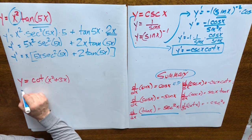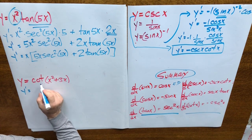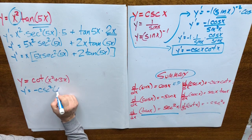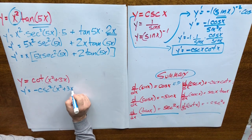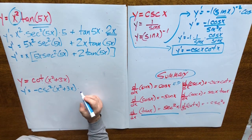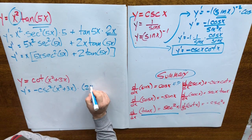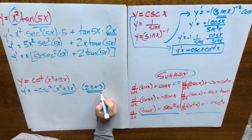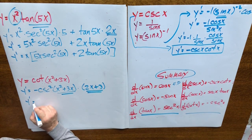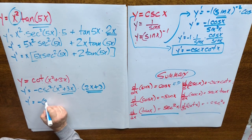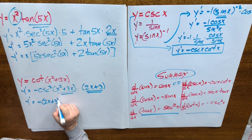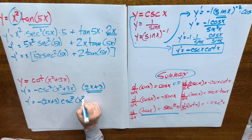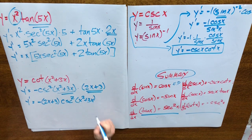Let's take a look at this one. Y prime equals: the derivative of cotangent is negative cosecant squared, the argument doesn't change, times the derivative of the argument. Putting the algebra in front, we have negative (2x plus 3) times cosecant squared (x squared plus 3x).